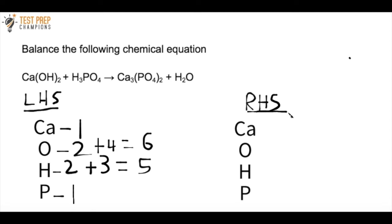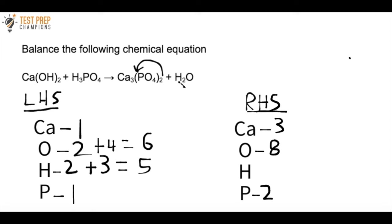Now taking stock of the right-hand side: Ca3(PO4)2 has three Ca's. The subscript 2 outside the parentheses applies to both P and O — so two P's, and four times two equals eight O's. H2O contributes two H's and one O. Right-hand side totals: three Ca, nine O (8+1), two H, two P. The two sides don't match, so we need to balance.